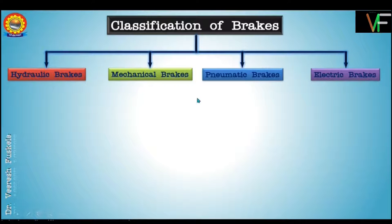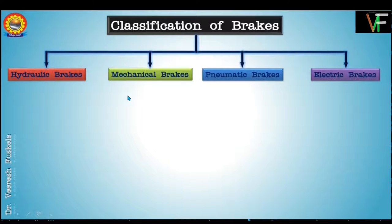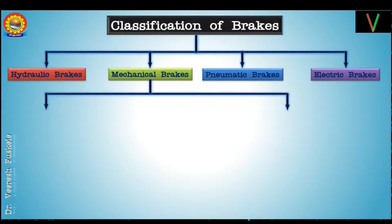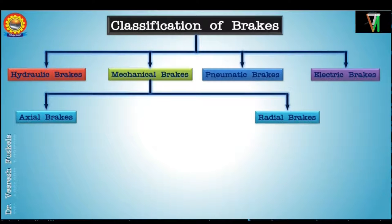As per the syllabus, we will be focusing only on mechanical brakes. Brakes are devices that dissipate kinetic energy of moving parts of a machine. In mechanical brakes, dissipation is achieved through sliding friction between a stationary object and a rotating part; these are used for low power absorption. Depending upon the direction of application of force, mechanical brakes are primarily of two types: radial brakes and axial brakes.